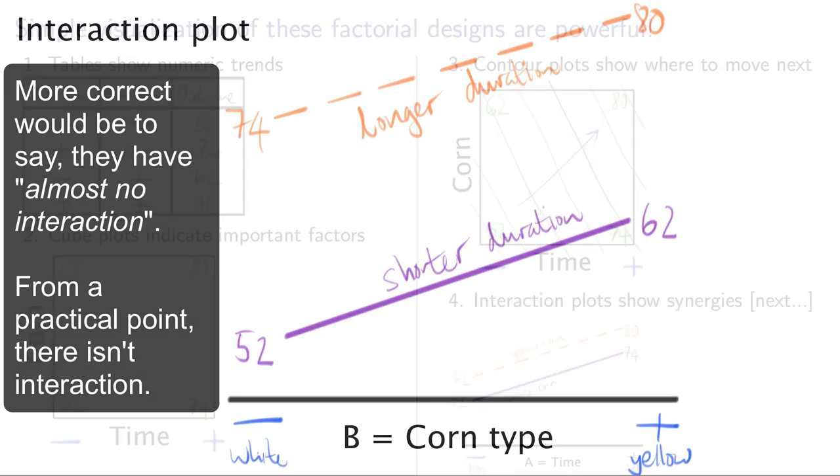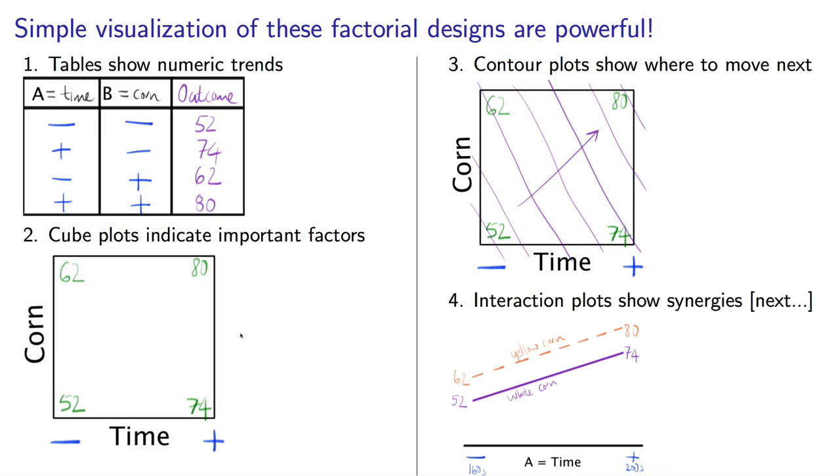One last point to wrap up. Notice that the four visualization methods we've considered in this video do not require any computer software. We've written out the table by hand, we've drawn a cube plot, and a contour plot, and now this interaction plot. You can apply these visualizations whether the factors are numeric or categorical. All of this demonstrates a distinct advantage of these experiments. We can quickly understand the results using simple graphical tools and quick calculations on a piece of paper. The fact that they are so simple means that the results are really easy to share with your colleagues and your managers at work.